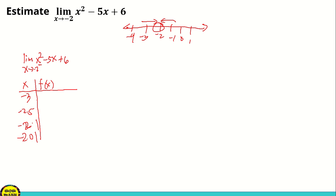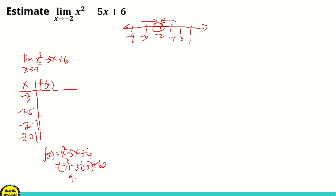After this, we're going to substitute all the values of x into f(x), which is x squared minus 5x plus 6. For example, if x is negative 3: f(x) = (-3)² minus 5(-3) plus 6 = 9 plus 15 plus 6, which equals 30.